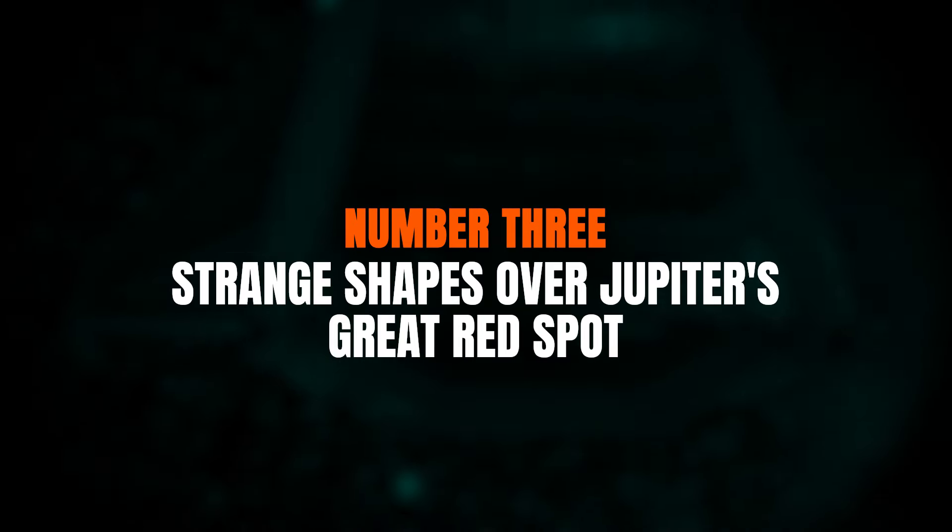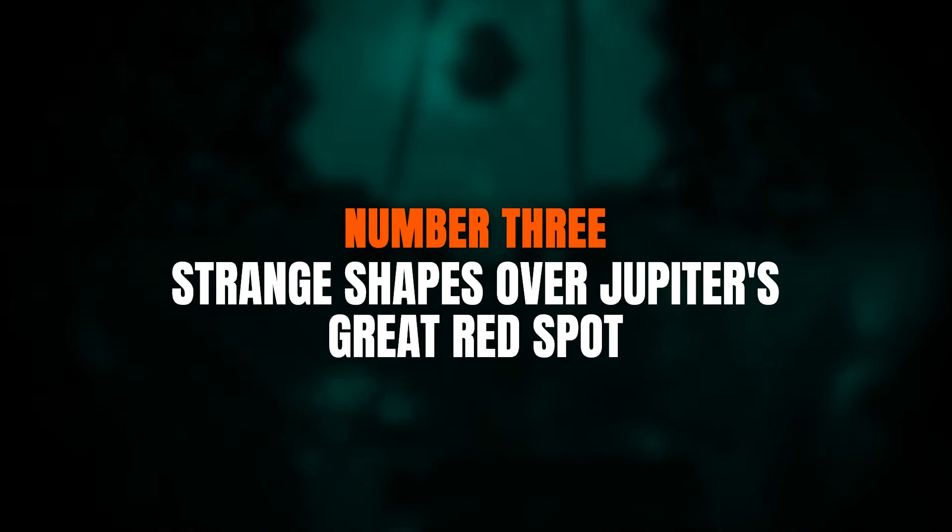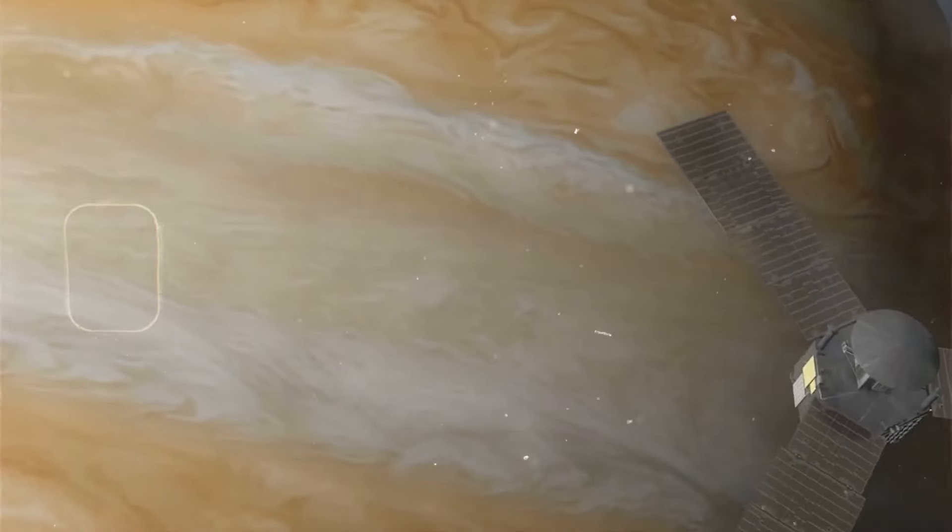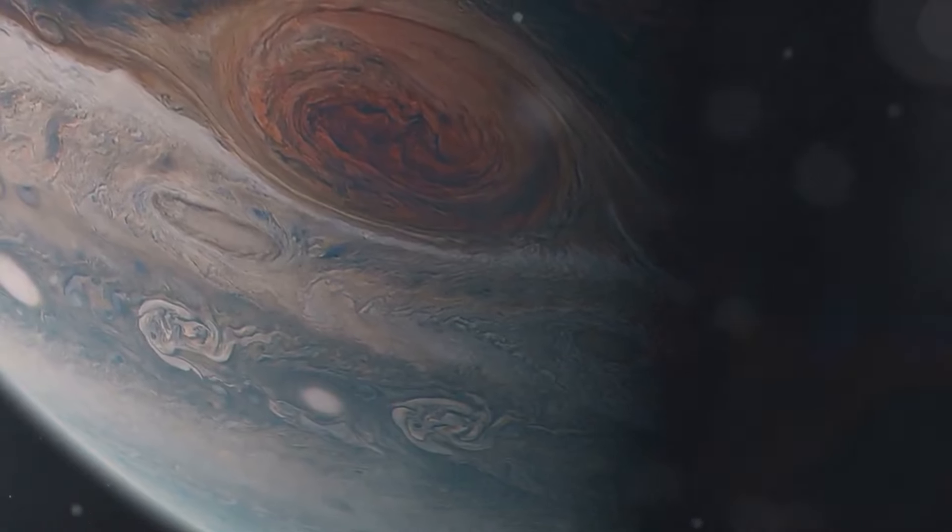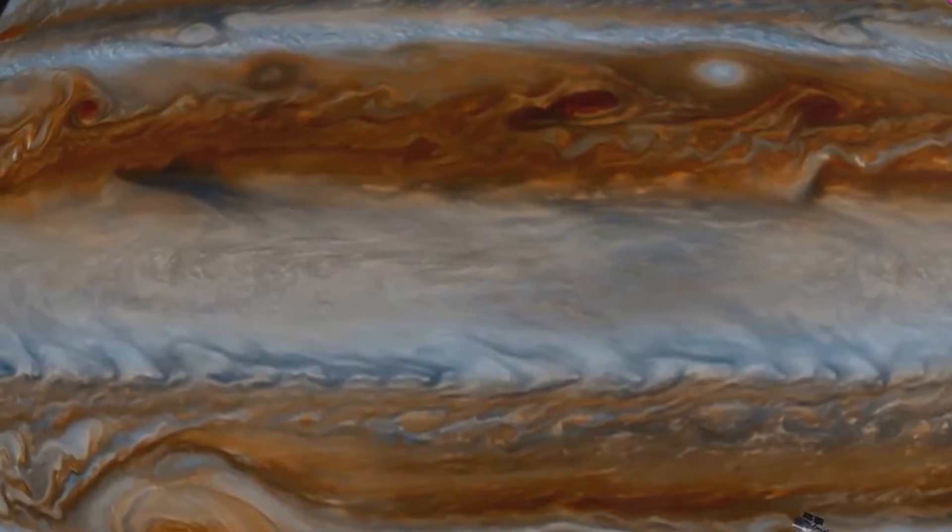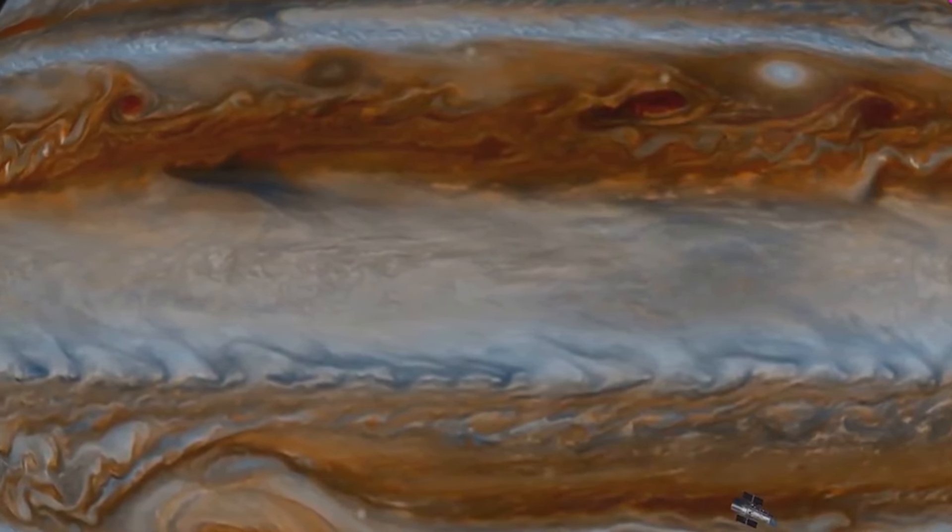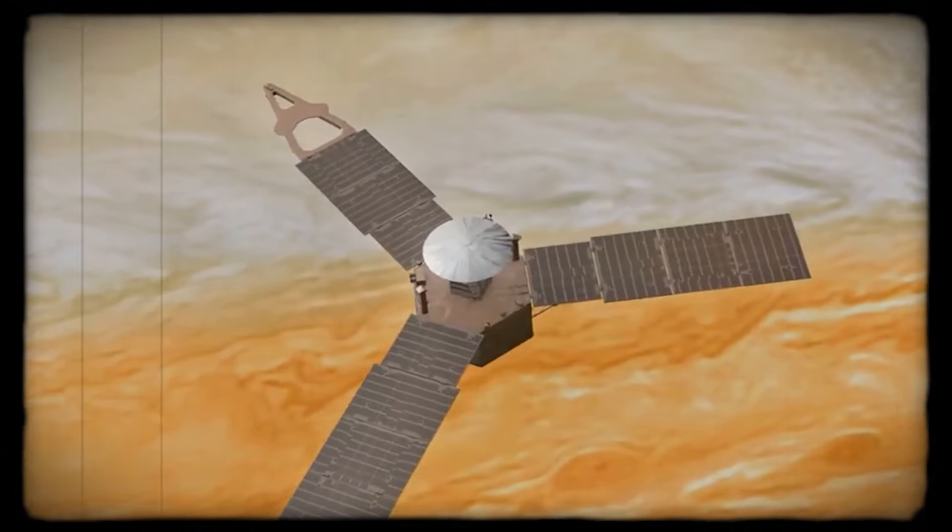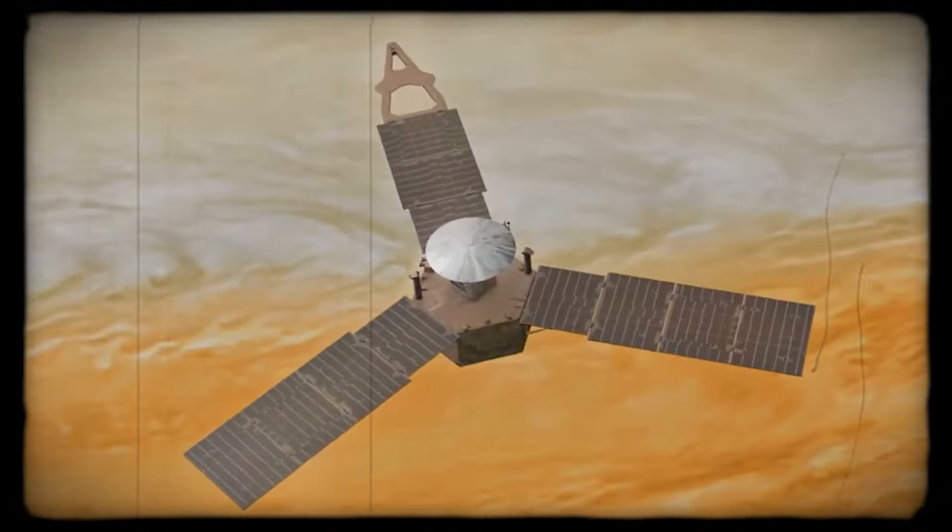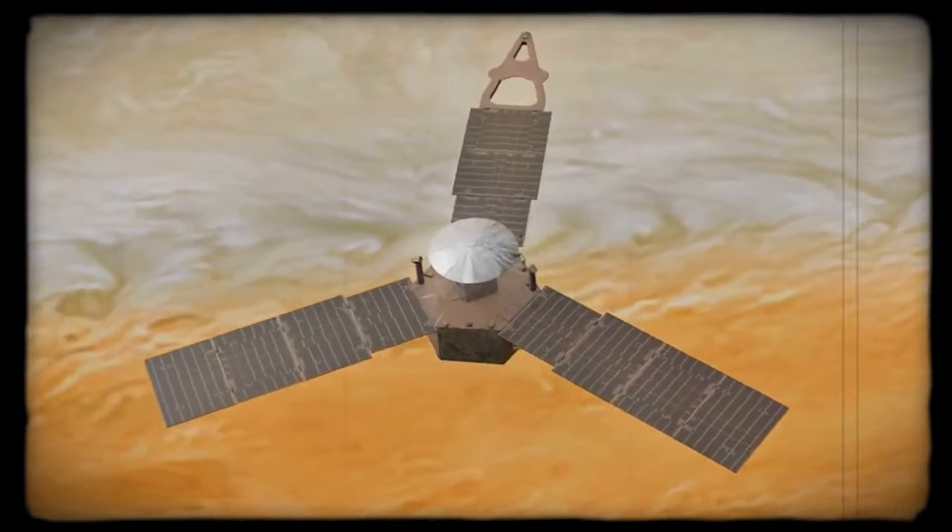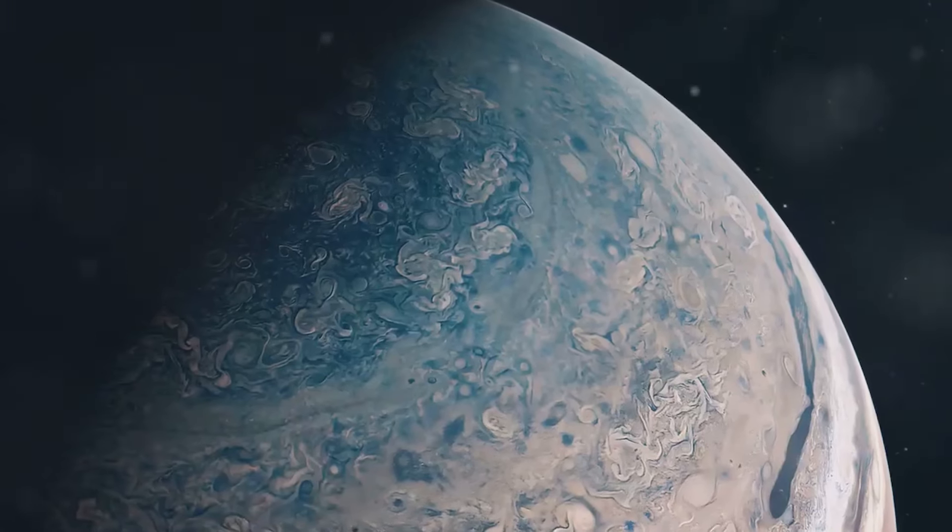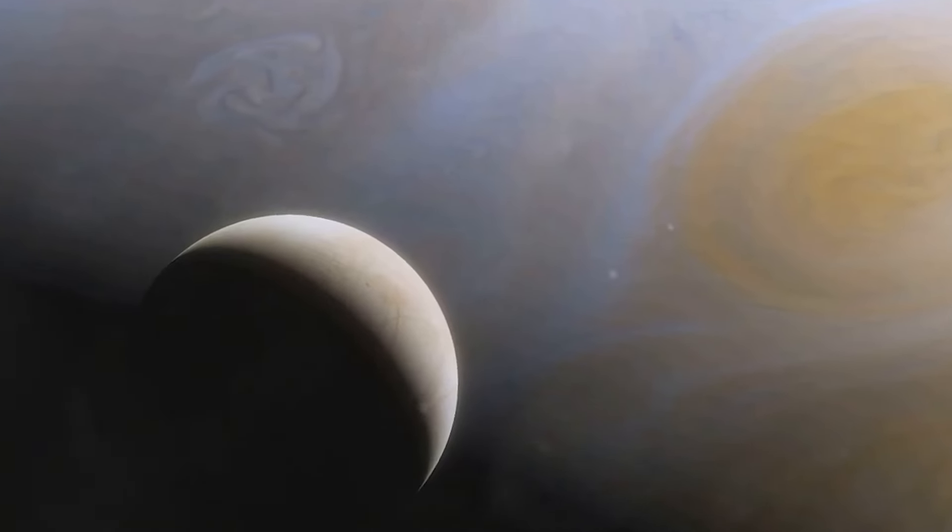Number three, strange shapes over Jupiter's Great Red Spot. The Great Red Spot is the largest storm in the solar system. It's believed to be double the size of our Earth and has existed for about 300 years. The winds there range from around 270 to 425 miles per hour, up to 3.5 times as fast as a tornado here on Earth. Despite its age, size, and power, scientists had actually suspected that the atmosphere above the Great Red Spot wasn't all that interesting.